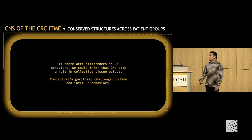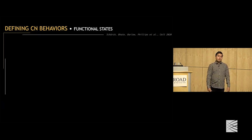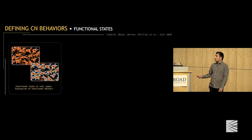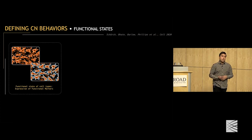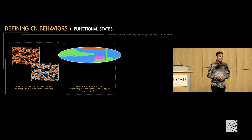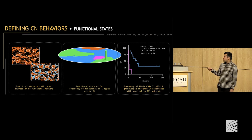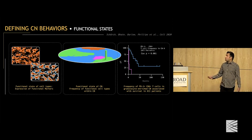The conceptual and algorithmic challenge was: we've defined these neighborhoods, and we want to infer their behaviors in a way that's biologically meaningful and algorithmically feasible. Taking inspiration from cell types — just as the functional state of a cell type is typically inferred by the expression of certain functional markers — we defined the functional state of a CN by the frequency of functional cell types within that CN.